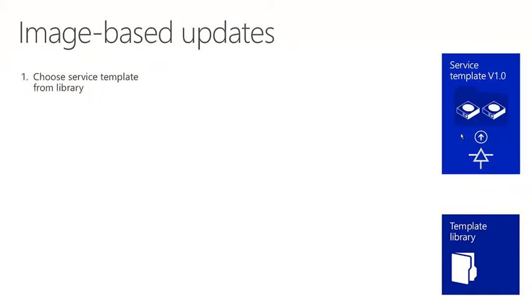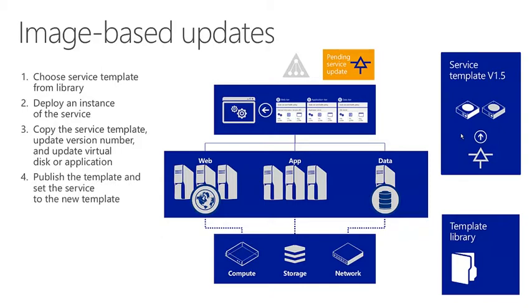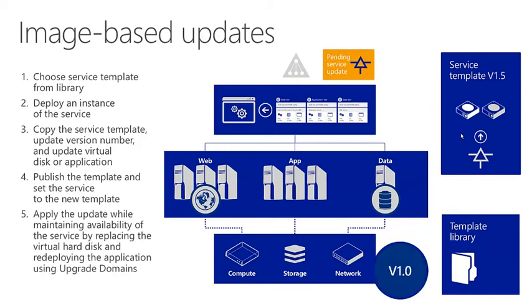Now let's take a look at image-based updates. The first step is similar — you choose a service template from the library and deploy an instance of the service. You copy the service template, update the version number, and update the virtual disk or application this time. Then publish the template and set the service to the new template. Finally, apply the update while maintaining availability of the service by replacing the virtual hard disk and redeploying the application using upgrade domains.